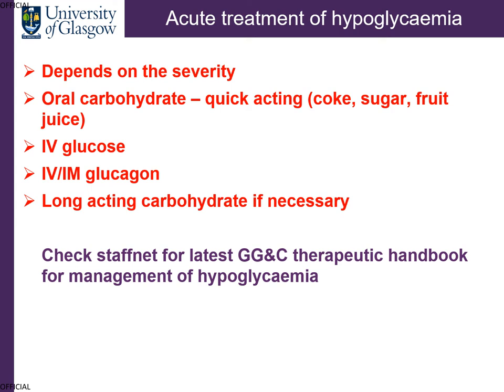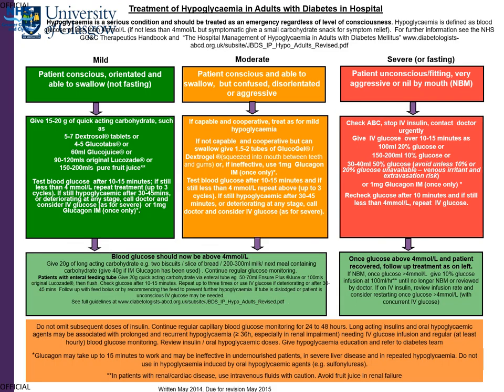Always check Staffnet and the latest GGC Therapeutic Handbook for management of hypoglycemia. In short, there is a traffic light type system based on mild, moderate, and severe hypoglycemia and how to manage each. An important point: do not omit the next insulin dose just because someone had a low blood sugar, as this can result in trouble down the line. Always seek advice from somebody familiar with the patient and with diabetes, because the last thing you want is to go from a low blood sugar to high blood sugar and potentially diabetic ketoacidosis, particularly if the next insulin injection is a very long-acting insulin.